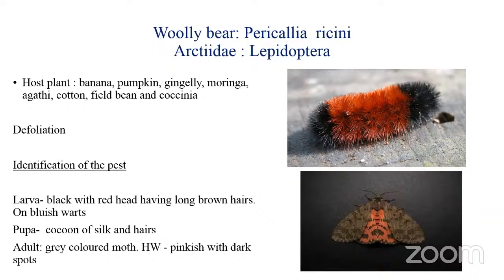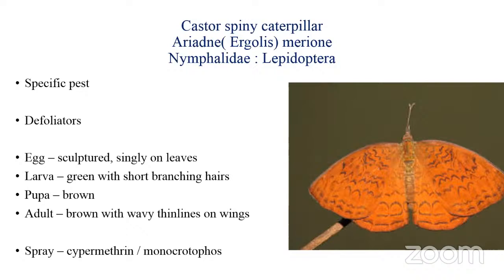The next pest is the castor spiny caterpillar, Ergolis merione, belonging to family Nymphalidae and order Lepidoptera. This is a specific pest of castor, attacking only castor. It is also a defoliator. The larva feeds on the upper surface of the leaves. The structured eggs are laid singly. The caterpillar has short branching hairs in groups all over its greenish body. The pupae are brown and the cocoon is made of silk and hairs. The adult is brown with wavy thin lines all over the wings.